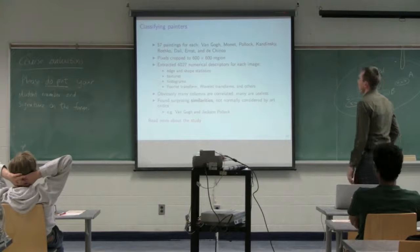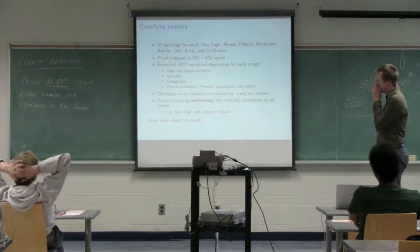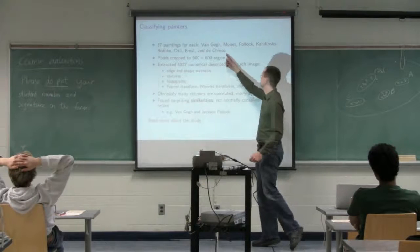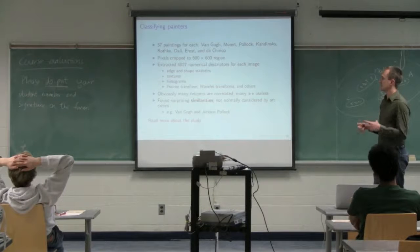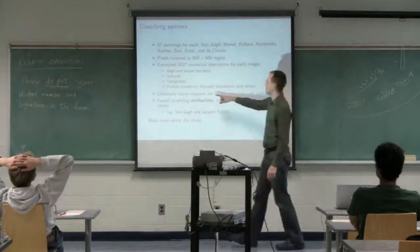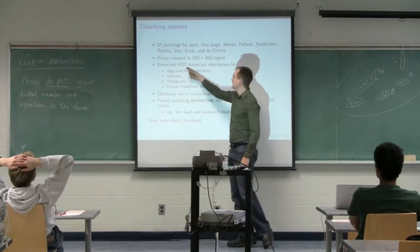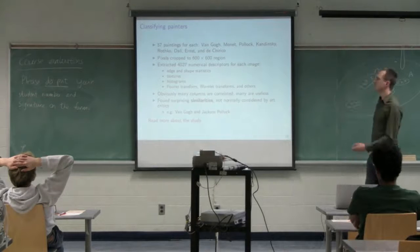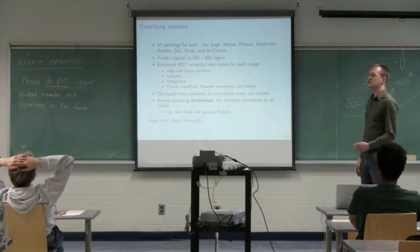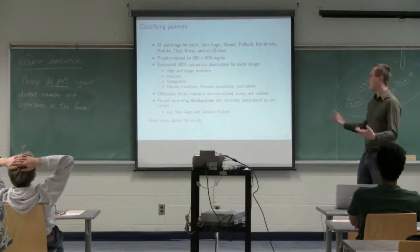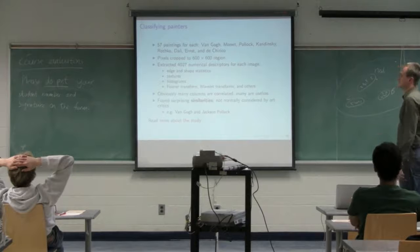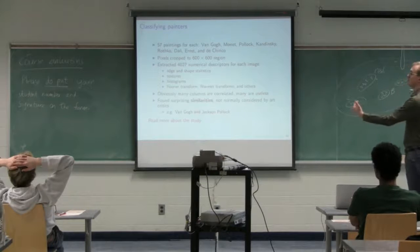Another interesting one I recently saw was using image data classification. This researcher in the United States took 57 paintings, digitized versions of paintings by these nine artists, a diverse group. He selected 600 by 600 cropping from the center of the painting, not necessarily the whole work. He put it through a huge brute force algorithm he's made freely available that extracts 4,000-odd features from that picture. It will do edge statistics, shapes statistics, textures, wavelet transforms which we looked at last week. Reading the article, it will take the wavelet transform of the wavelet transform of the wavelet transform.